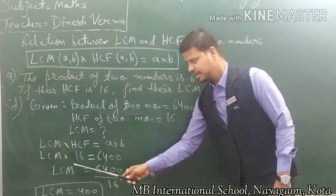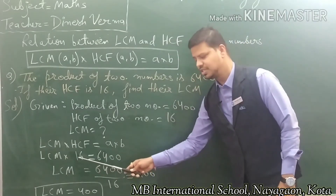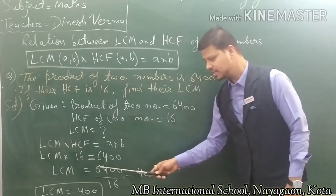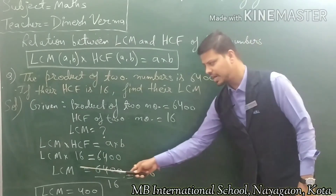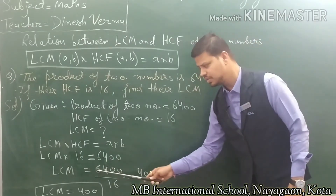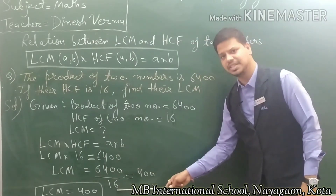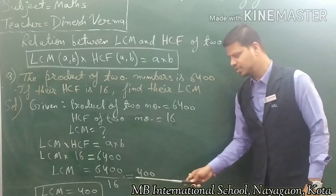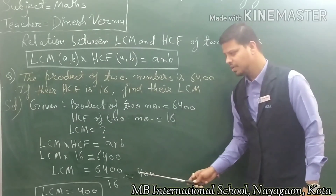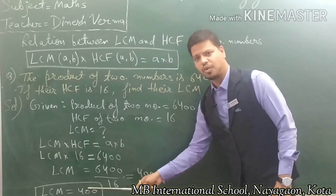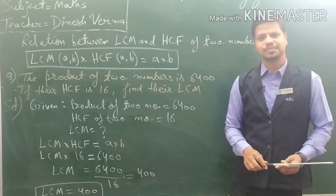Now, LCM × 16 = 6400. Dividing both sides by 16, LCM = 6400 ÷ 16 = 400. Therefore, LCM equals 400. Thank you.